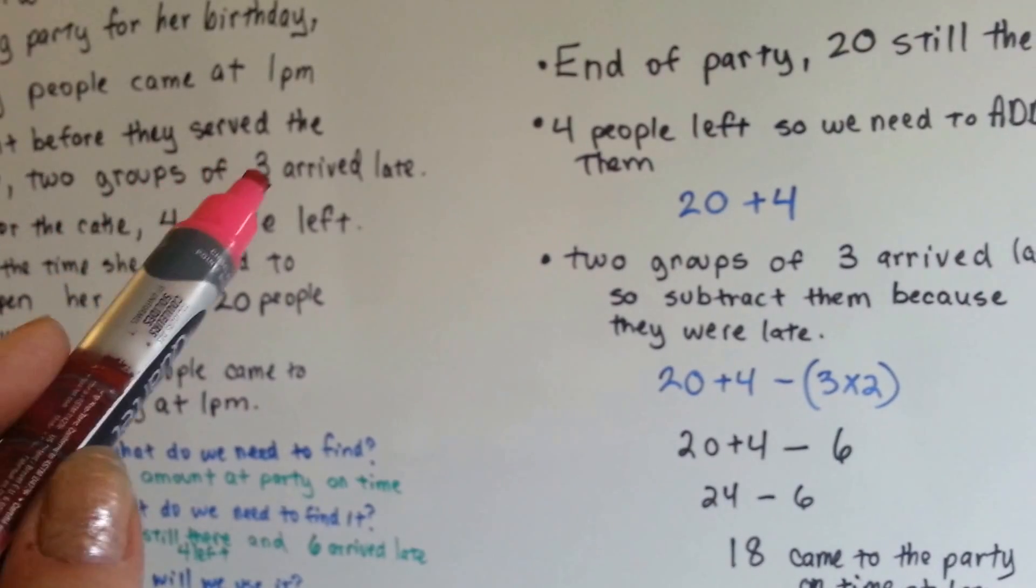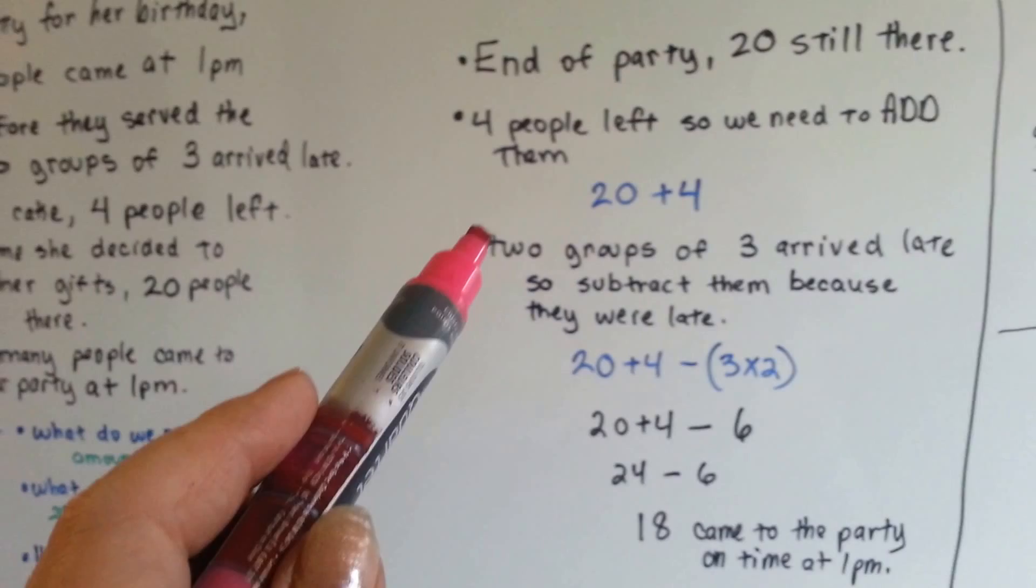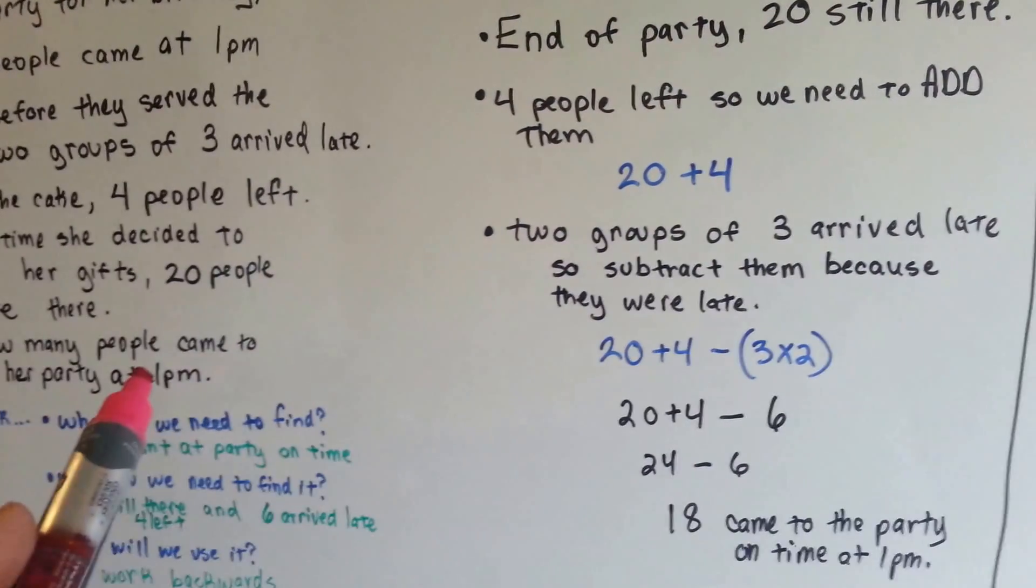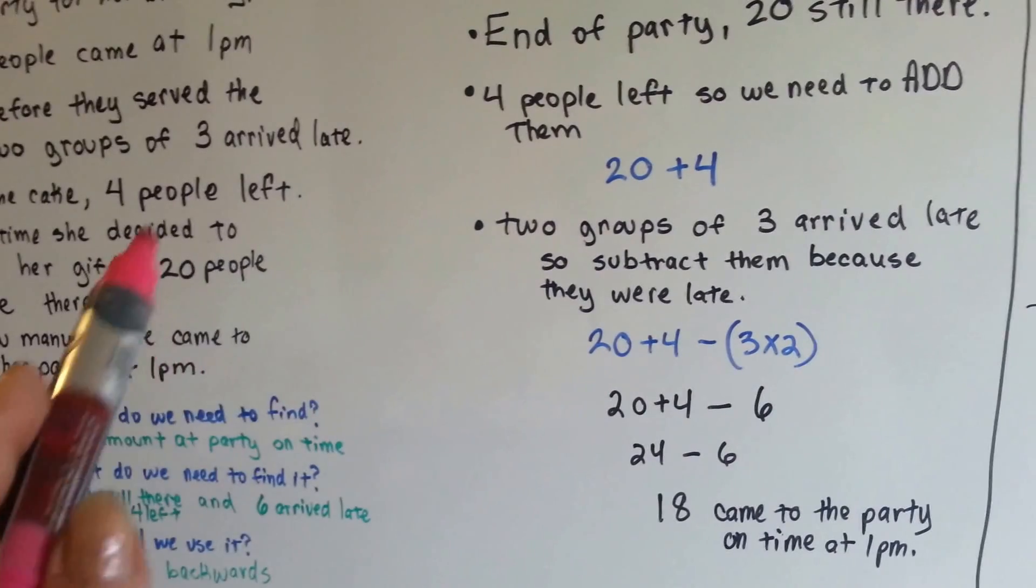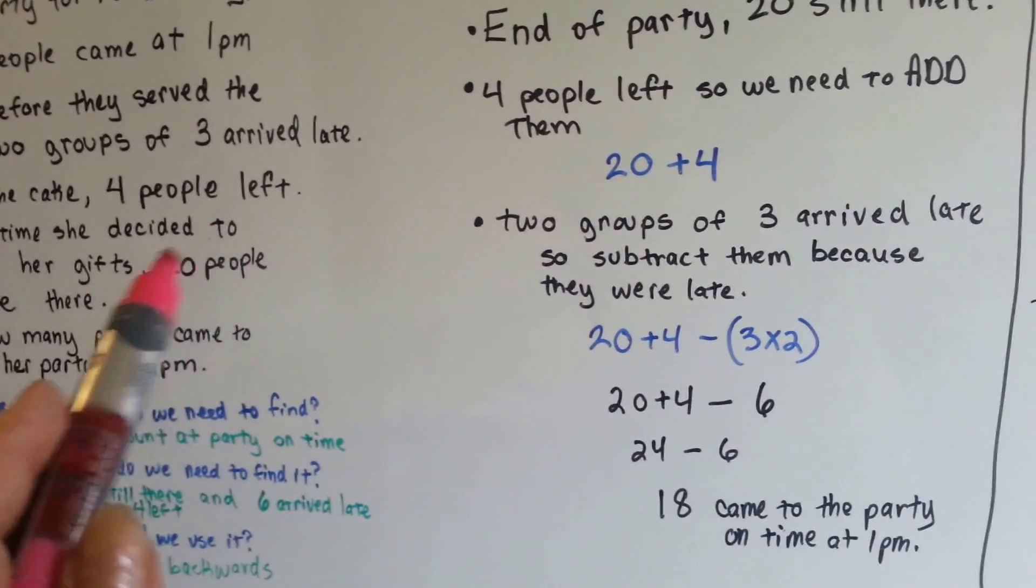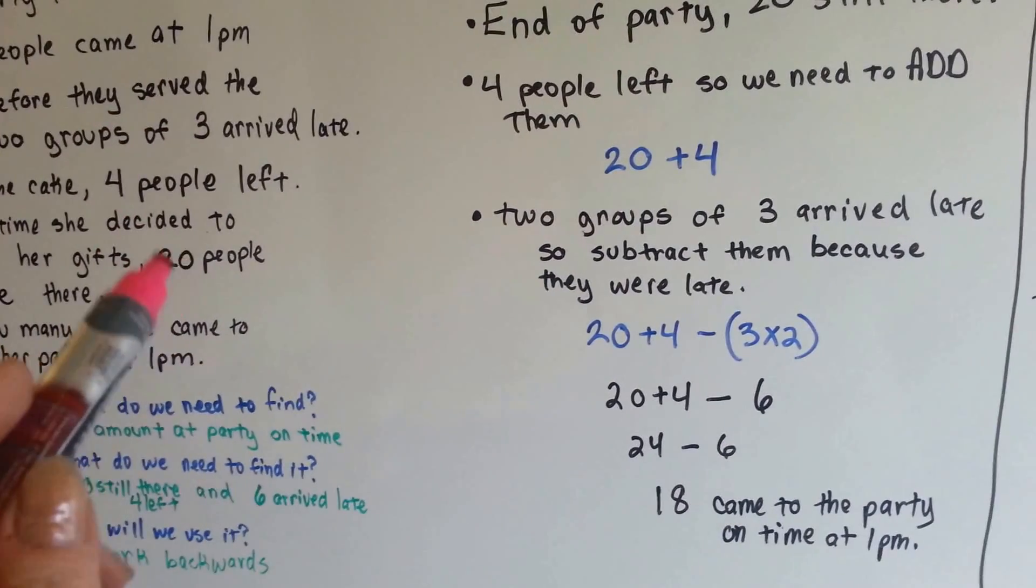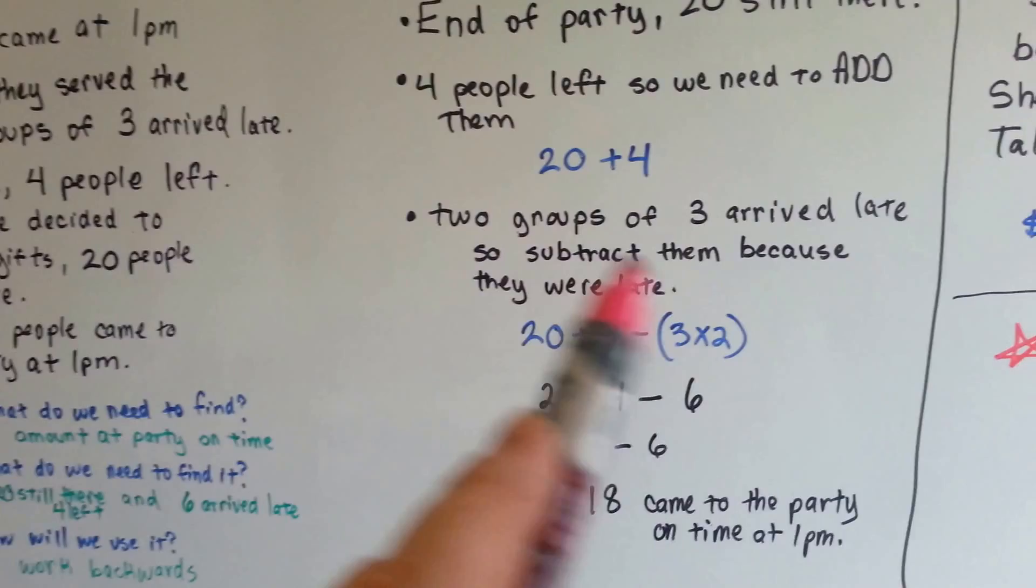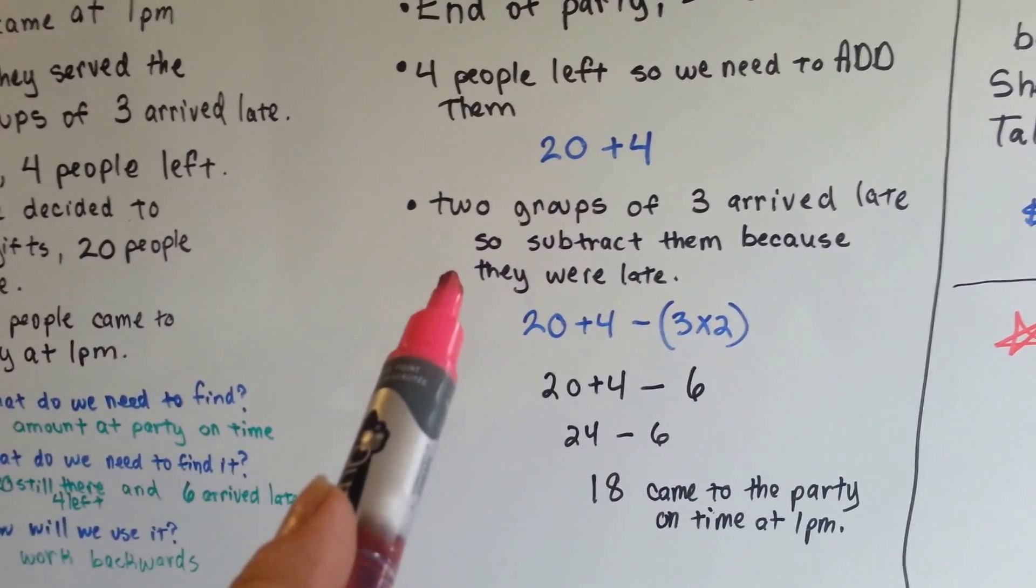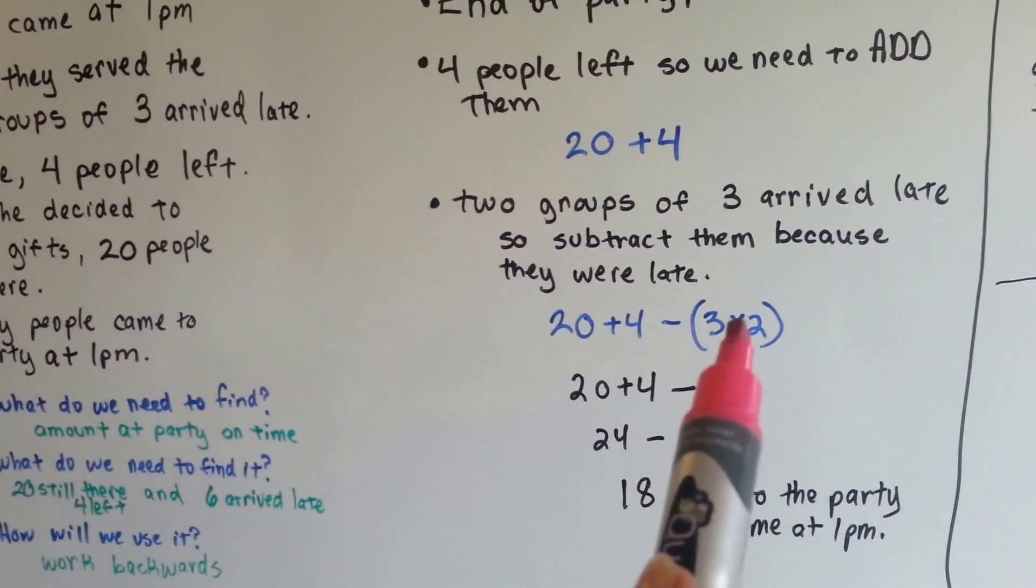Well, two groups of three arrived late, so those six people didn't show up on time, did they? So we can't count them with the amount of people that were there at 1pm. So we need to take them away from the total. See, they're still there. They're still at the party. They just arrived late, and we're trying to figure out who arrived on time. So even though they're still part of this 20, we need to get rid of them. So two groups of three arrived late, so we subtract them because they were late. So we have 20 plus 4 minus the 3 times 2.